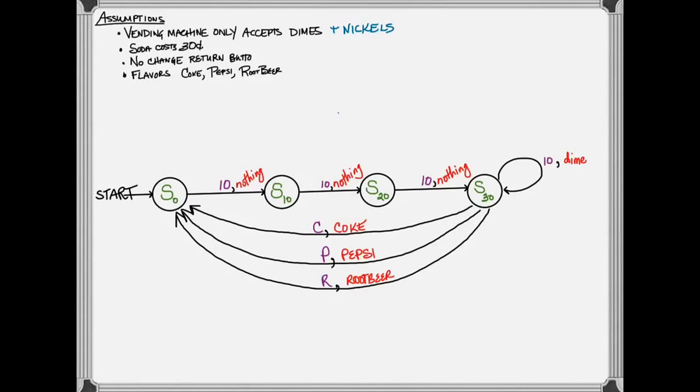When you added nickels to your finite state machine, I hope that this ended up increasing the number of states that you could be in for your machine. You could now have possible deposits in your vending machine of 0, 5, 10, 15, 20, 25, or 30 cents total.